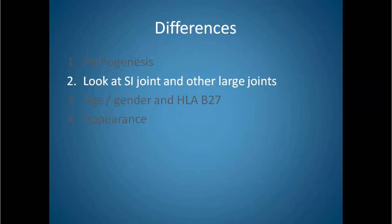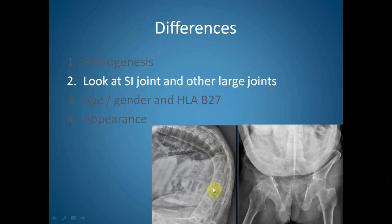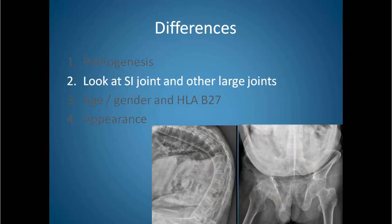The second difference is the involvement of the SI joint and other large joints. In the first case, there was bony ankylosis of the hip joint and bilateral sacroiliac joints, and severe kyphotic deformity in the dorsolumbar spine in a patient only 48 years old — not the kyphosis seen in degenerative spine disease. Involvement of the SI joint and other large joints goes in favor of seronegative spondyloarthritis.